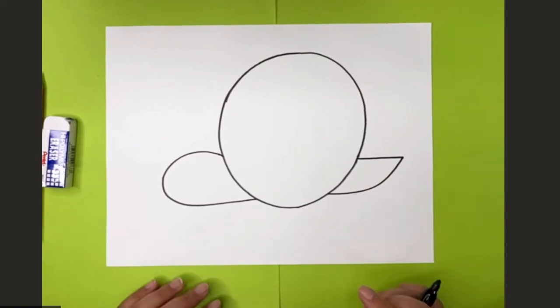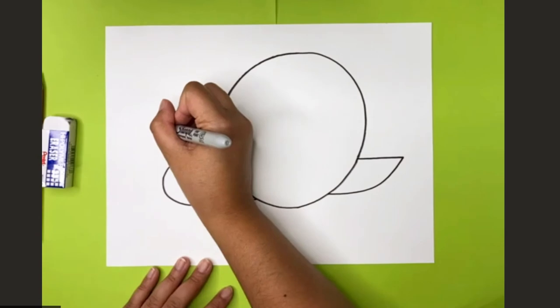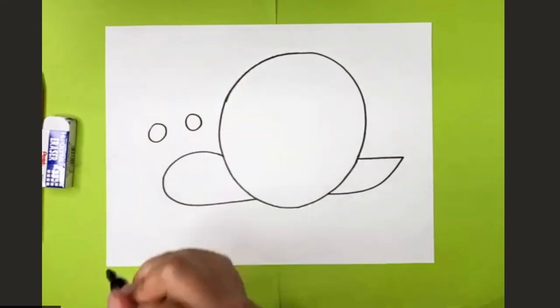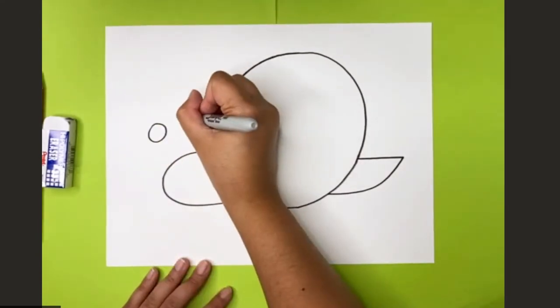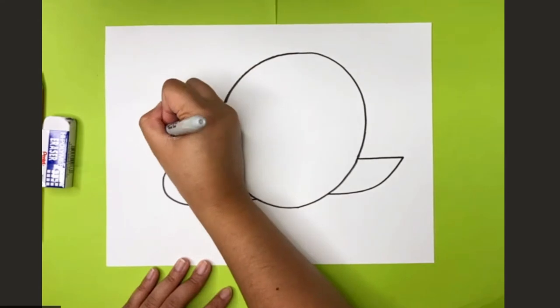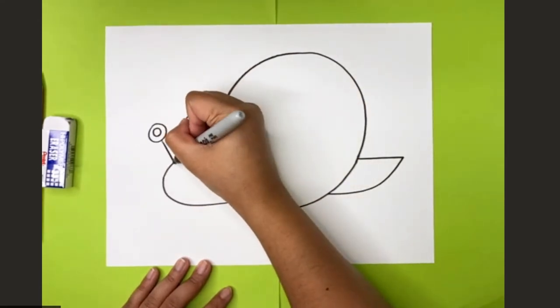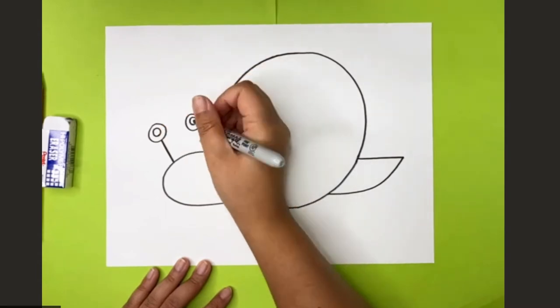Oh, you're right, the eyes. So we're going to draw two circles above the head like this. Okay, and then you can add a small circle inside for the eyeball, the pupil. And then you're going to connect it with the line going down towards the head.